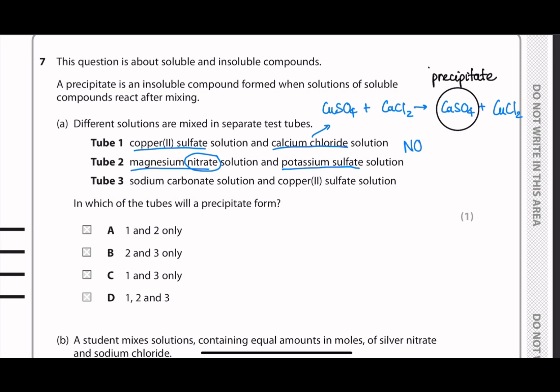We'll look at tube 2, where we have magnesium nitrate and potassium sulfate. So most of the nitrate compounds are always soluble. So when this reaction happens, we have potassium nitrate and magnesium sulfate. So that means that this reaction won't produce any precipitate because both are soluble compounds.